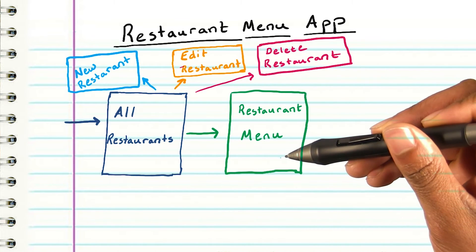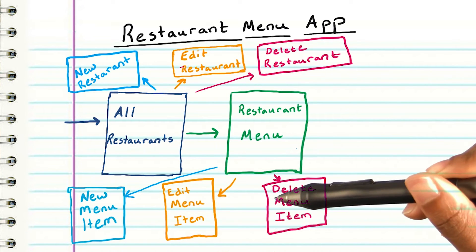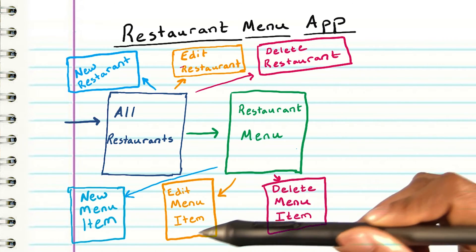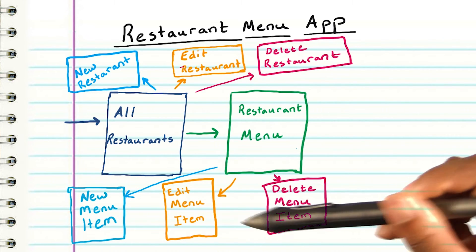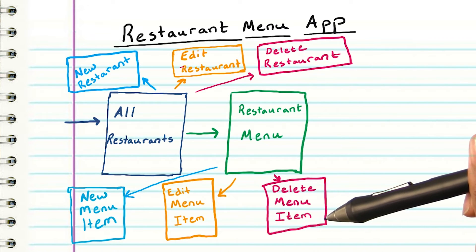On a specific menu page, the user can view the menu for each restaurant. Similarly, they will have the option to add, edit, and delete menu items from a specific menu.